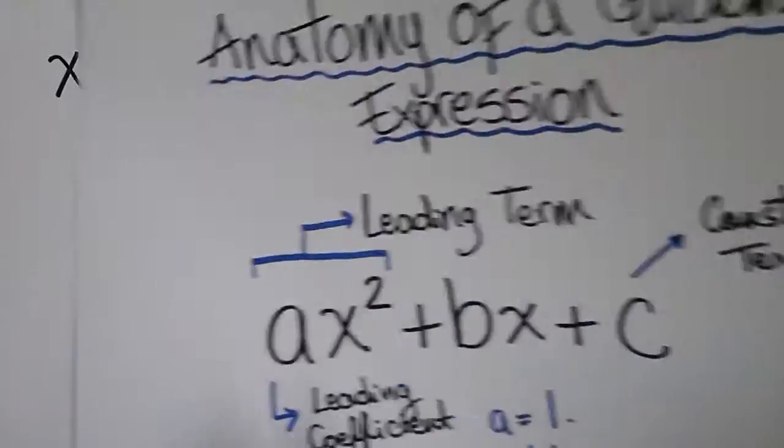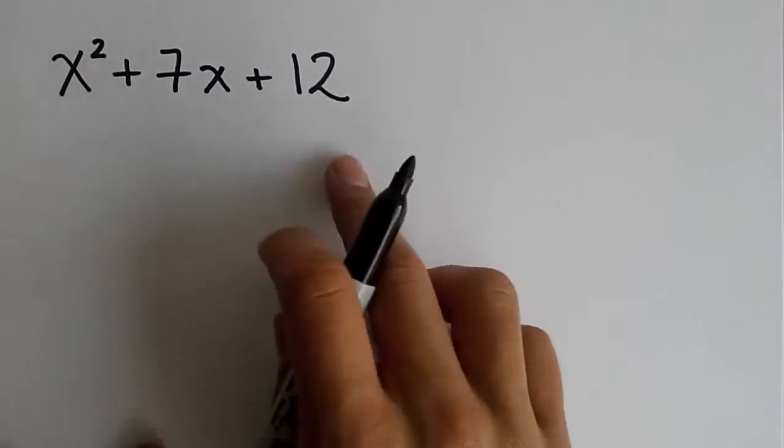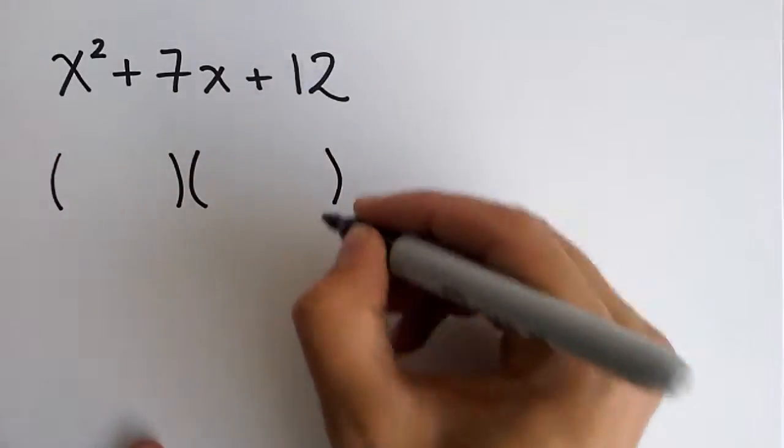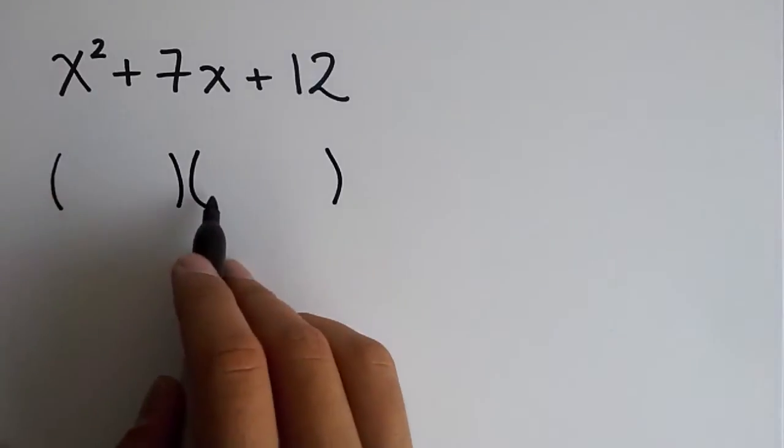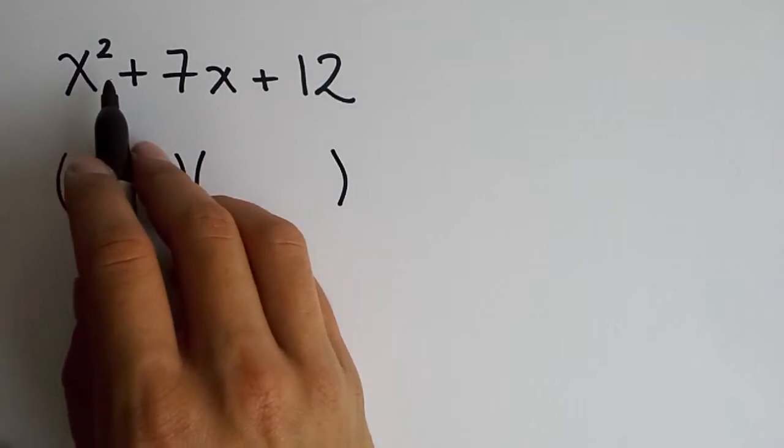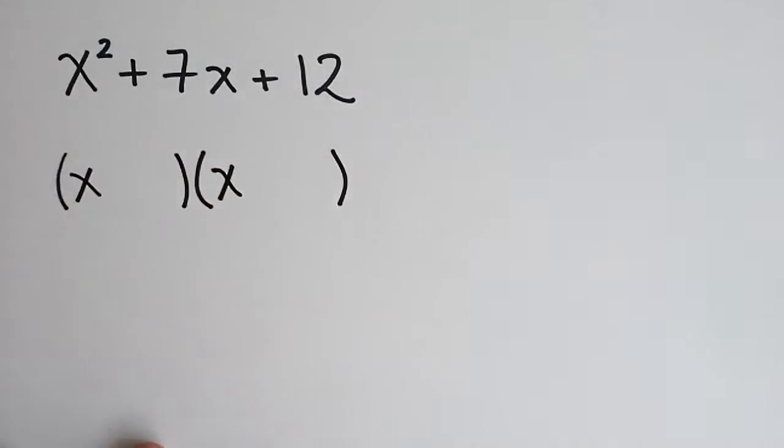Let's check out our first example: x squared plus 7x plus 12. So we know that a quadratic expression can be factored into two parentheses, where the first two terms should multiply up to the first one. So two things that multiply to x squared, there's no other than x and x.